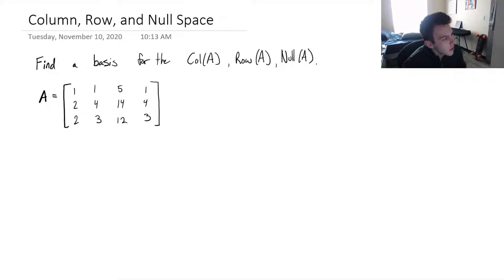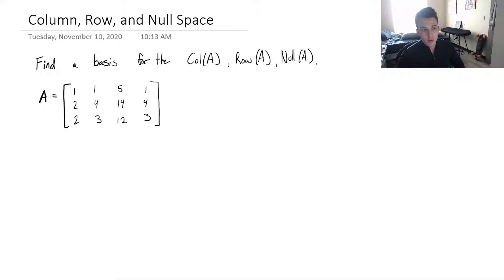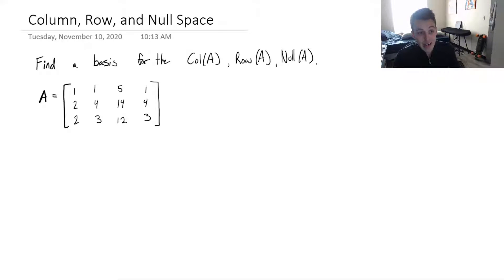Hey everyone. I want to do a video that goes over an example of finding the basis for the column space, the row space, and the null space — what exactly all of these things are, in my own words, in a way that makes it really easy to understand. Because they're actually not as hard as they seem. The goal of this video is to understand what these things are and how to easily compute them in a way that makes sense, so you don't have to memorize.